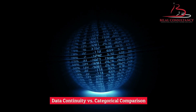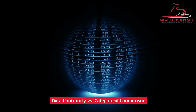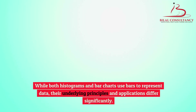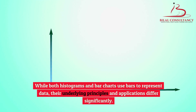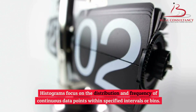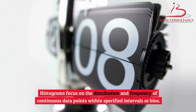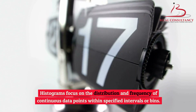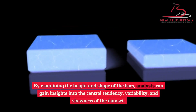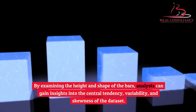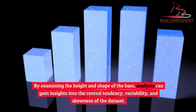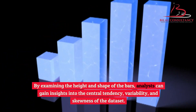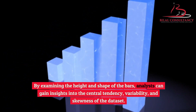Data continuity versus categorical comparison. While both histograms and bar charts use bars to represent data, their underlying principles and applications differ significantly. Histograms focus on the distribution and frequency of continuous data points within specified intervals or bins. By examining the height and shape of the bars, analysts can gain insights into the central tendency, variability, and skewness of the dataset.